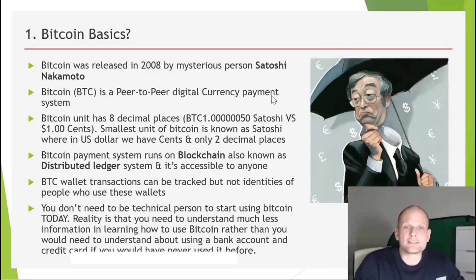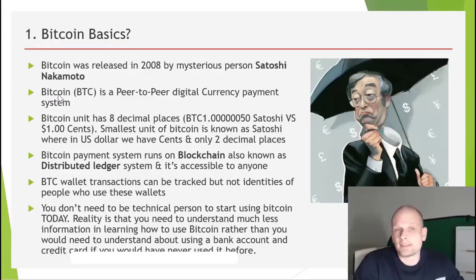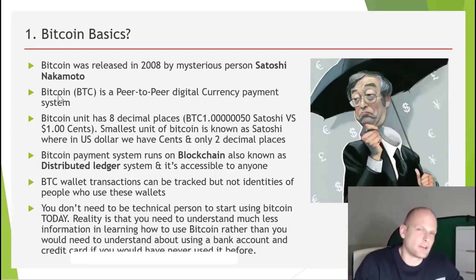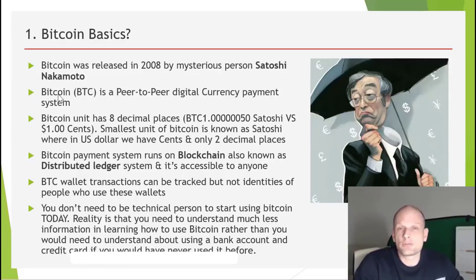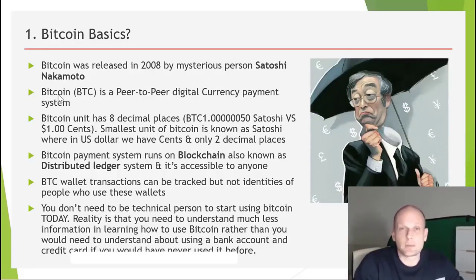Bitcoin is a peer-to-peer digital currency payment system. This means that you don't need banks anymore to make payments. If someone wants to send Bitcoin to us, they can send it directly — there are no more financial institutions involved. This is why banks and other financial institutions dislike Bitcoin so much, because with Bitcoin we can make payments directly and we control our funds privately.